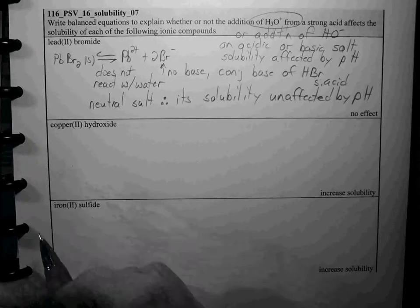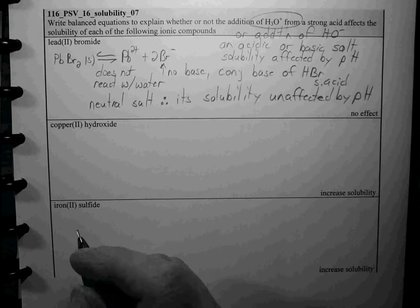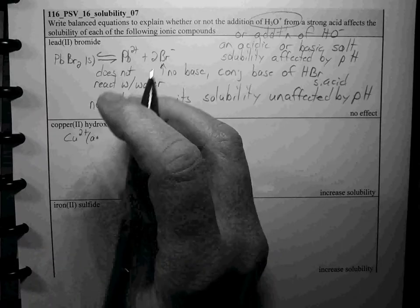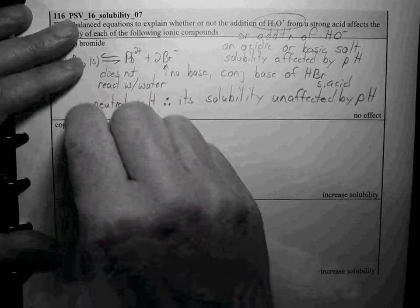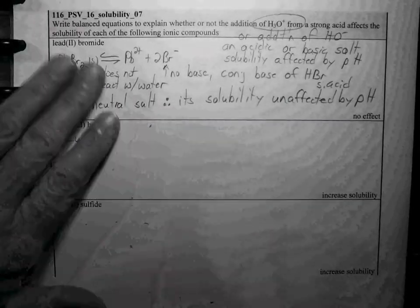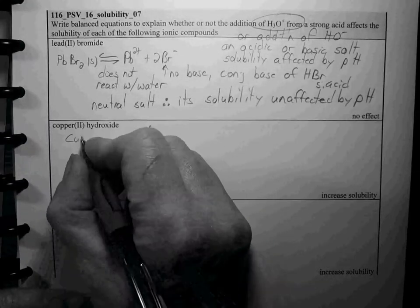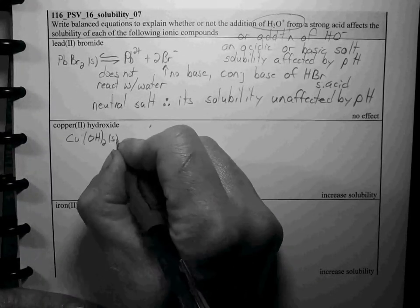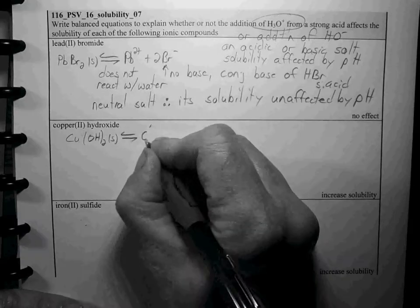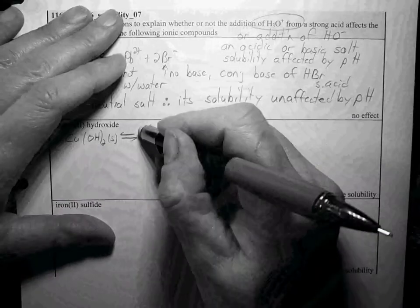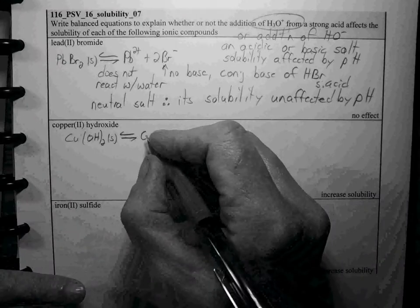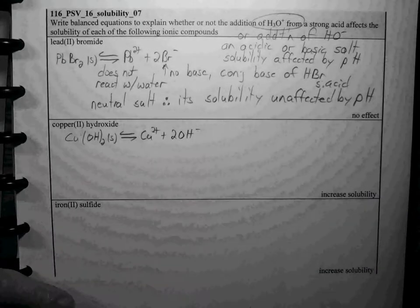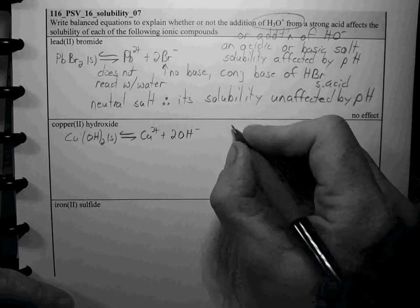The next candidate is copper(II) hydroxide. Let's write the dissolution reaction. Cu(OH)2 gives copper 2+ and 2 hydroxides. This is obviously a basic salt.